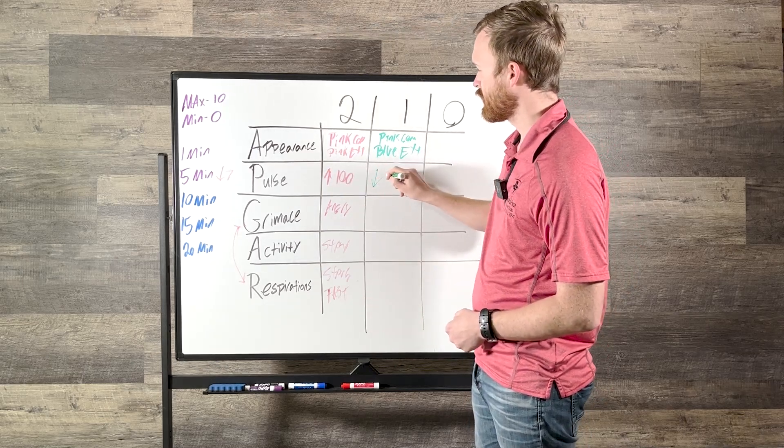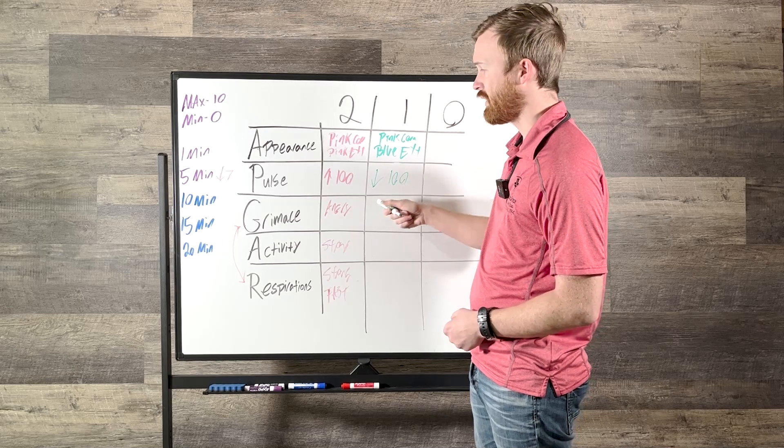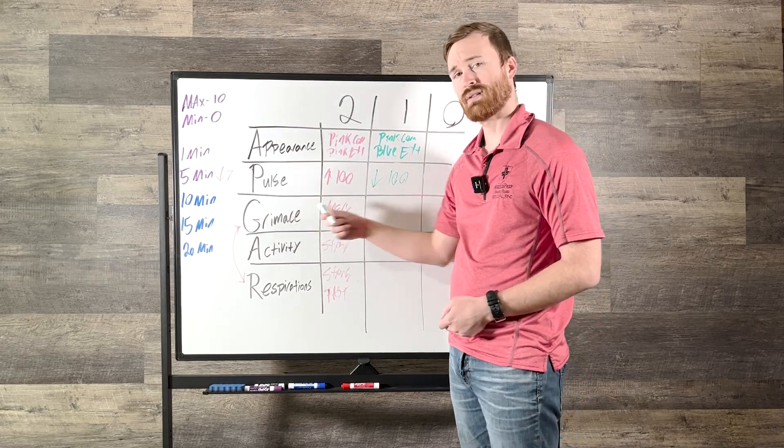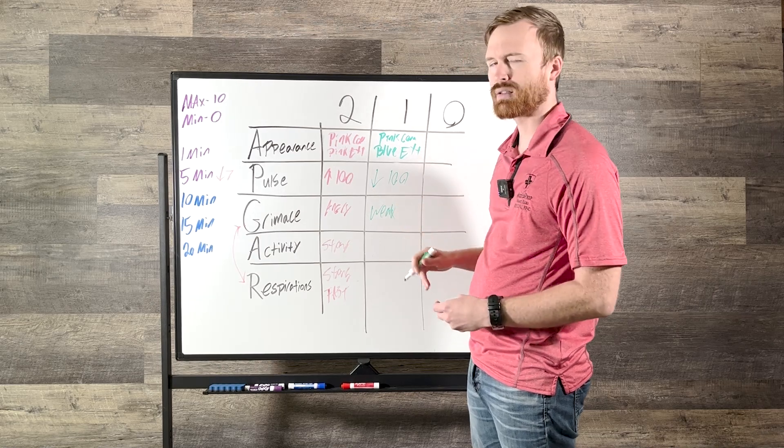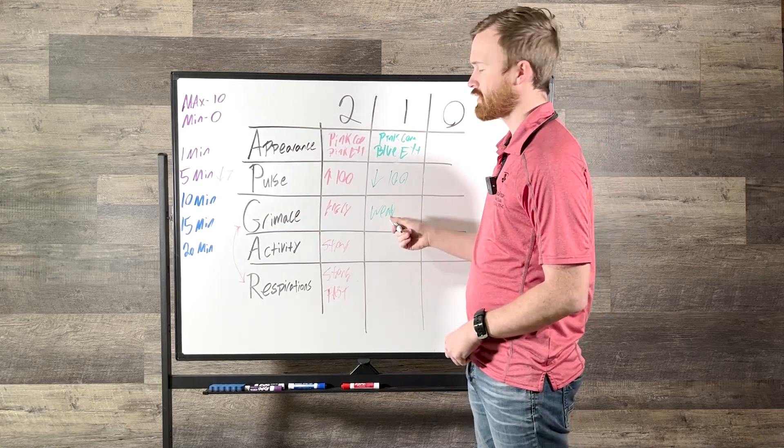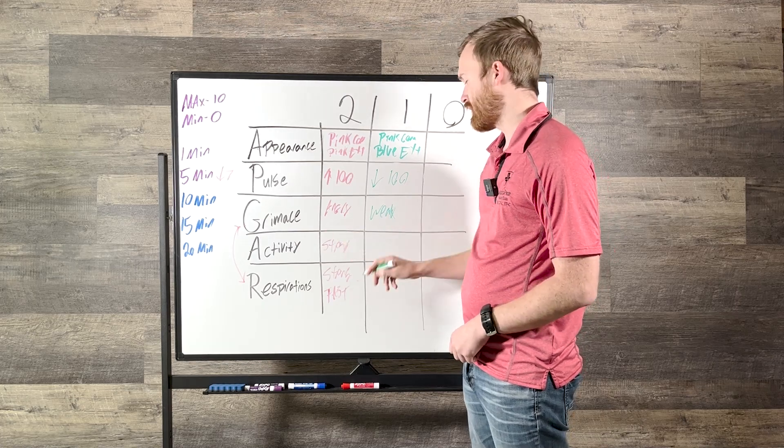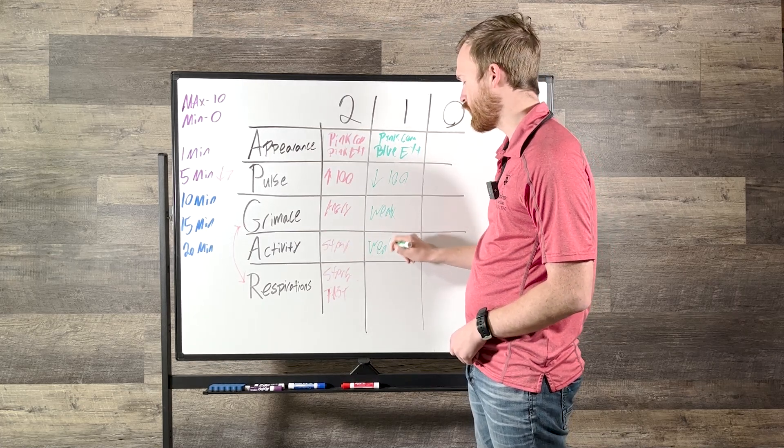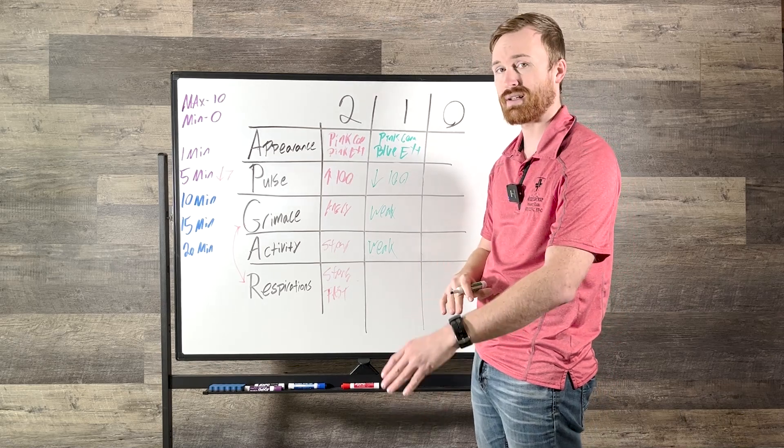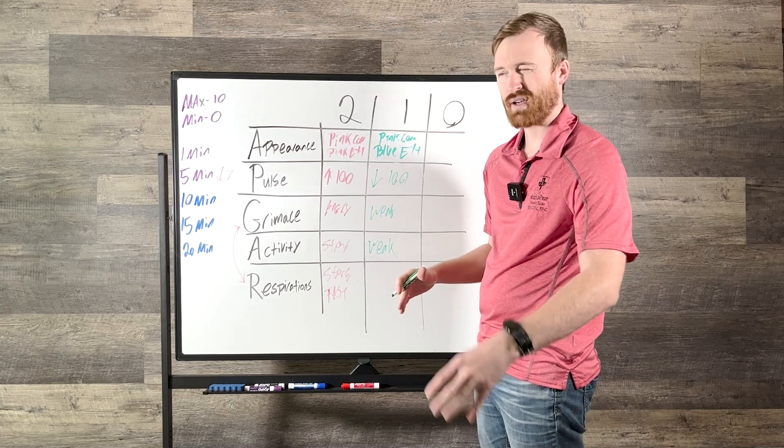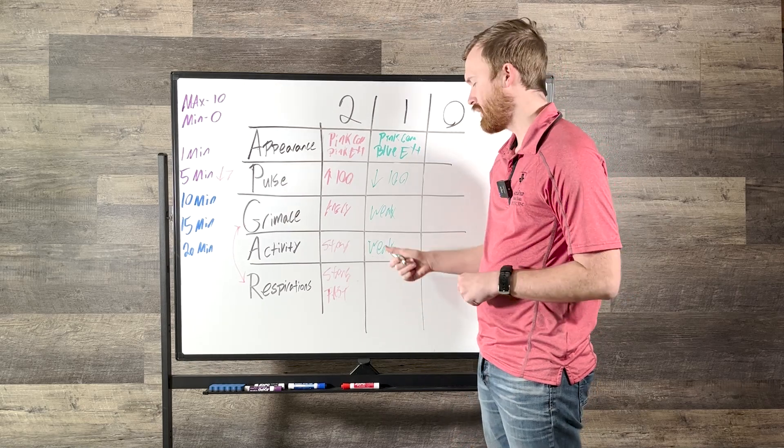Now for pulse, this one here is going to be less than 100. Grimace is going to be, if they are weakly agitated and they're just like, I'm kind of mildly inconvenienced by you, then that's going to be worth one point. Activity is going to be weak resistance. So if you go to grab their arm, extend it out, and it doesn't really do a whole lot, but they're kind of sort of pushing or kind of sort of resistant, that's going to be one point.